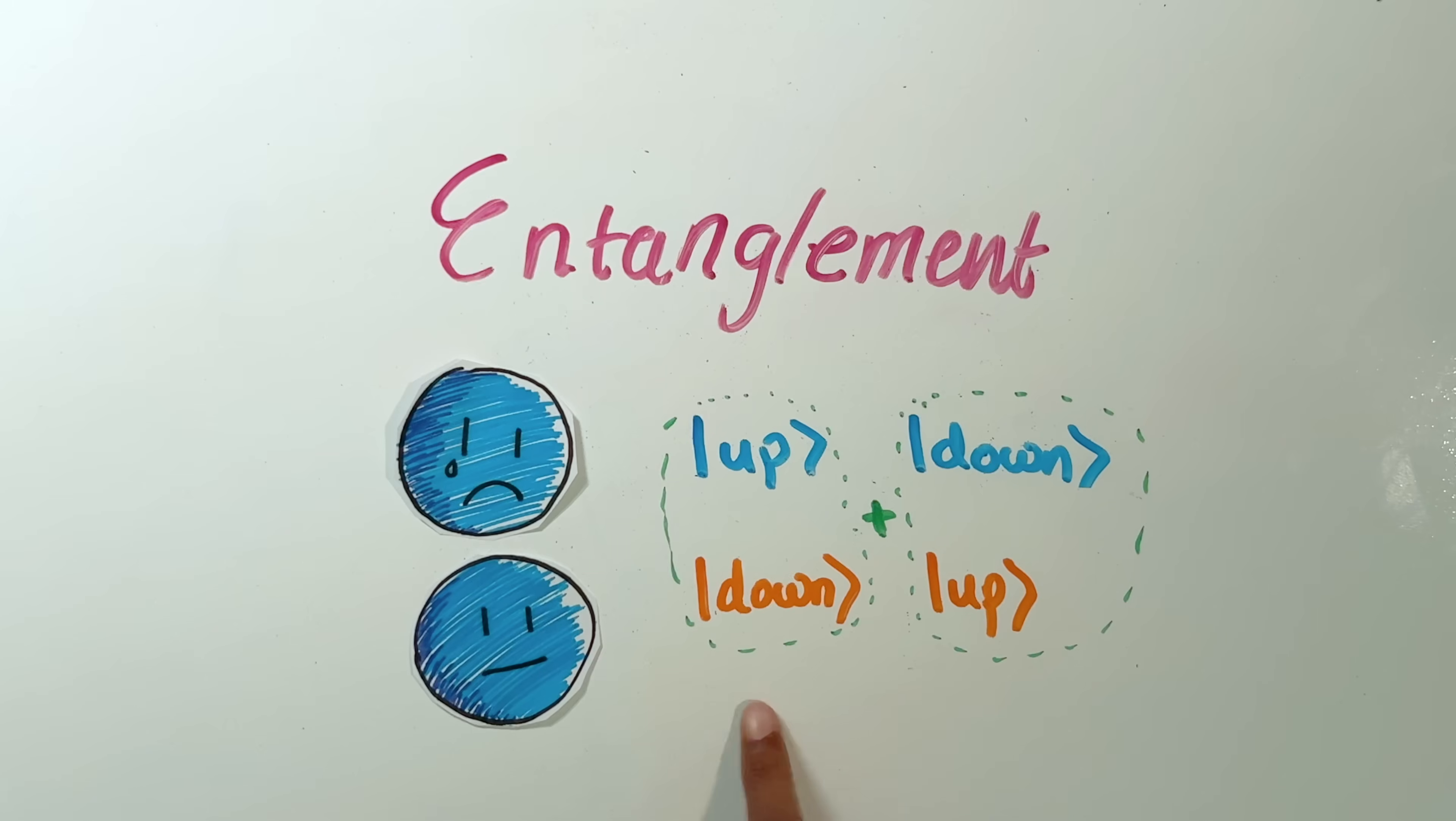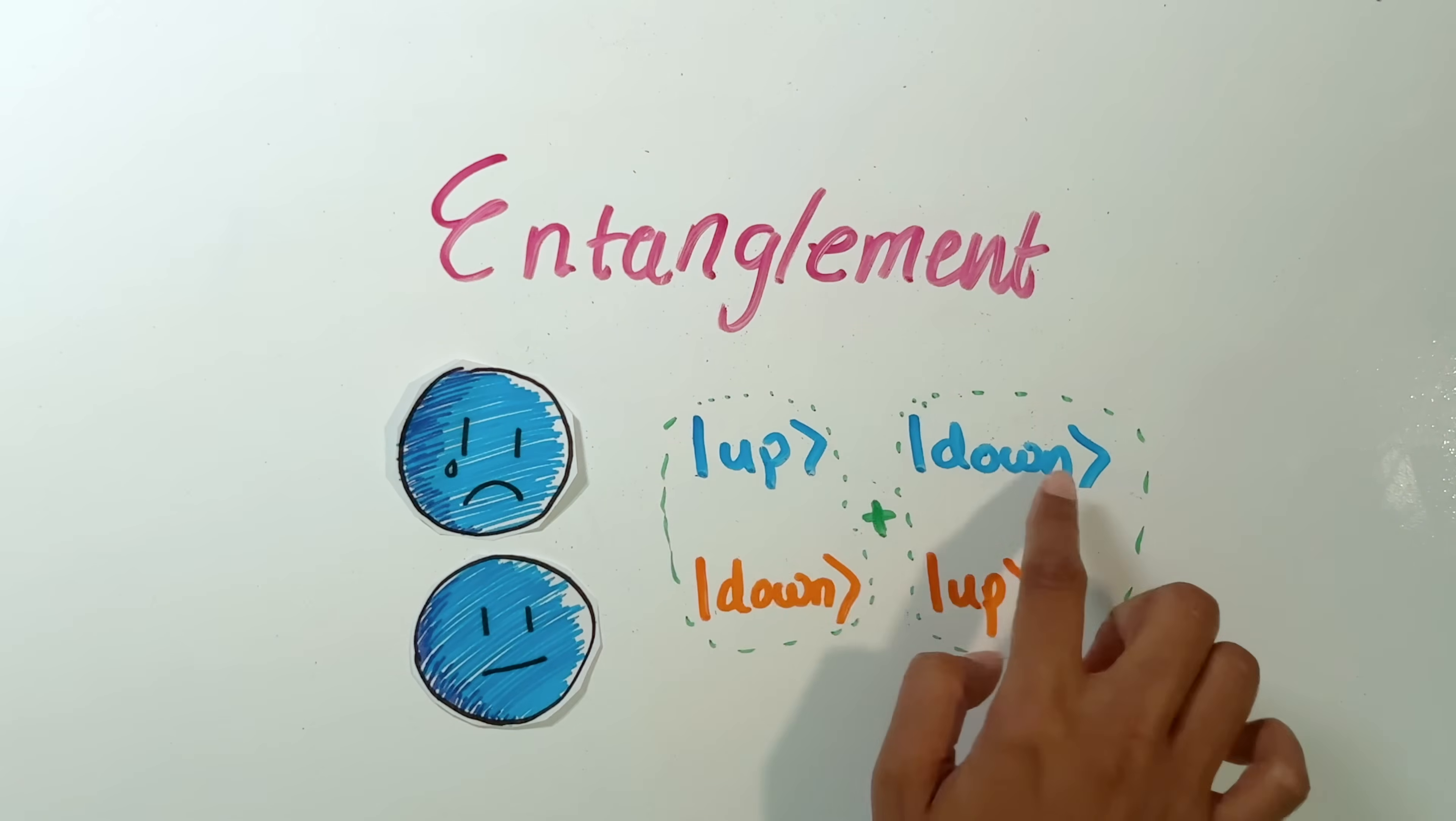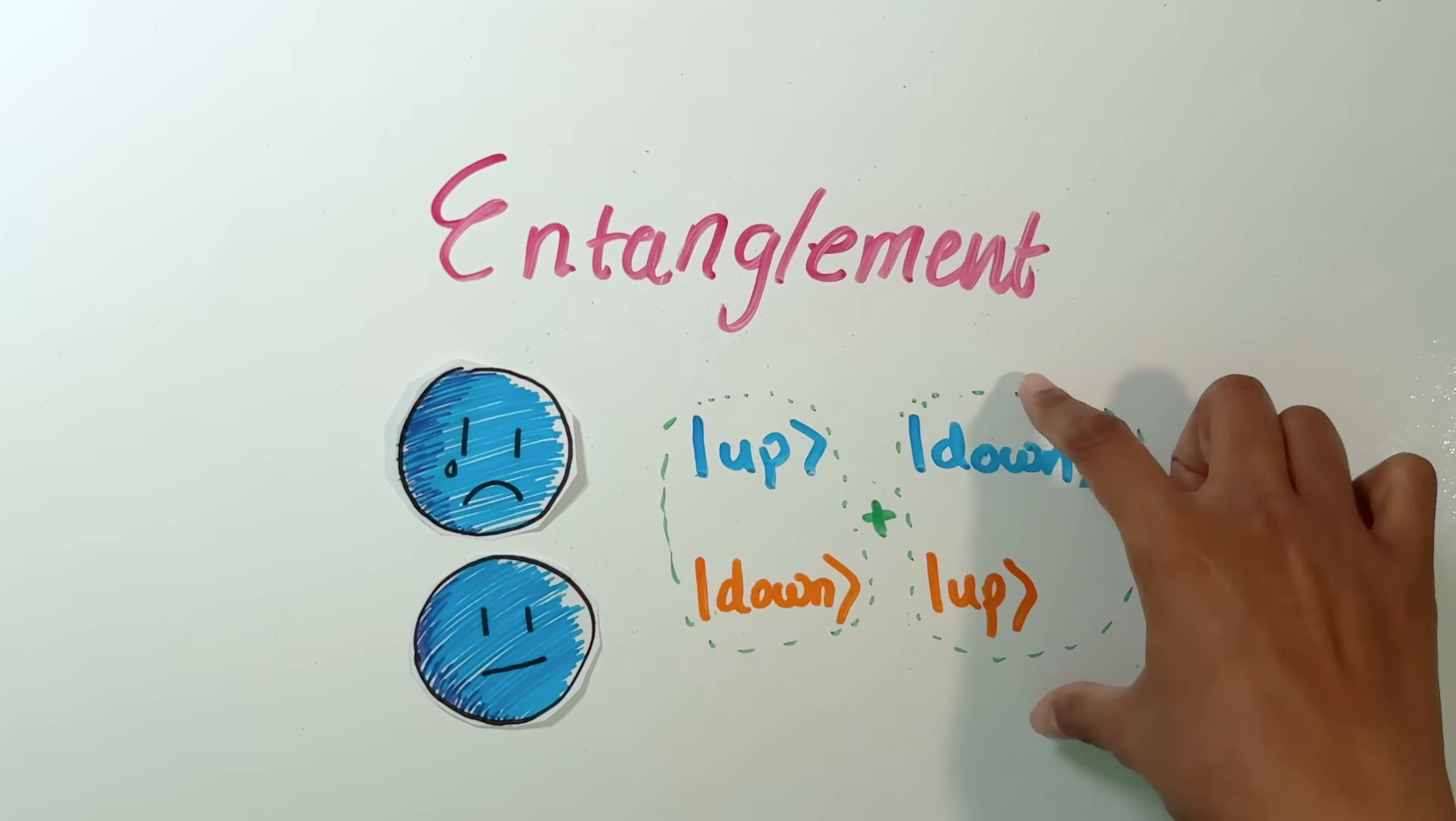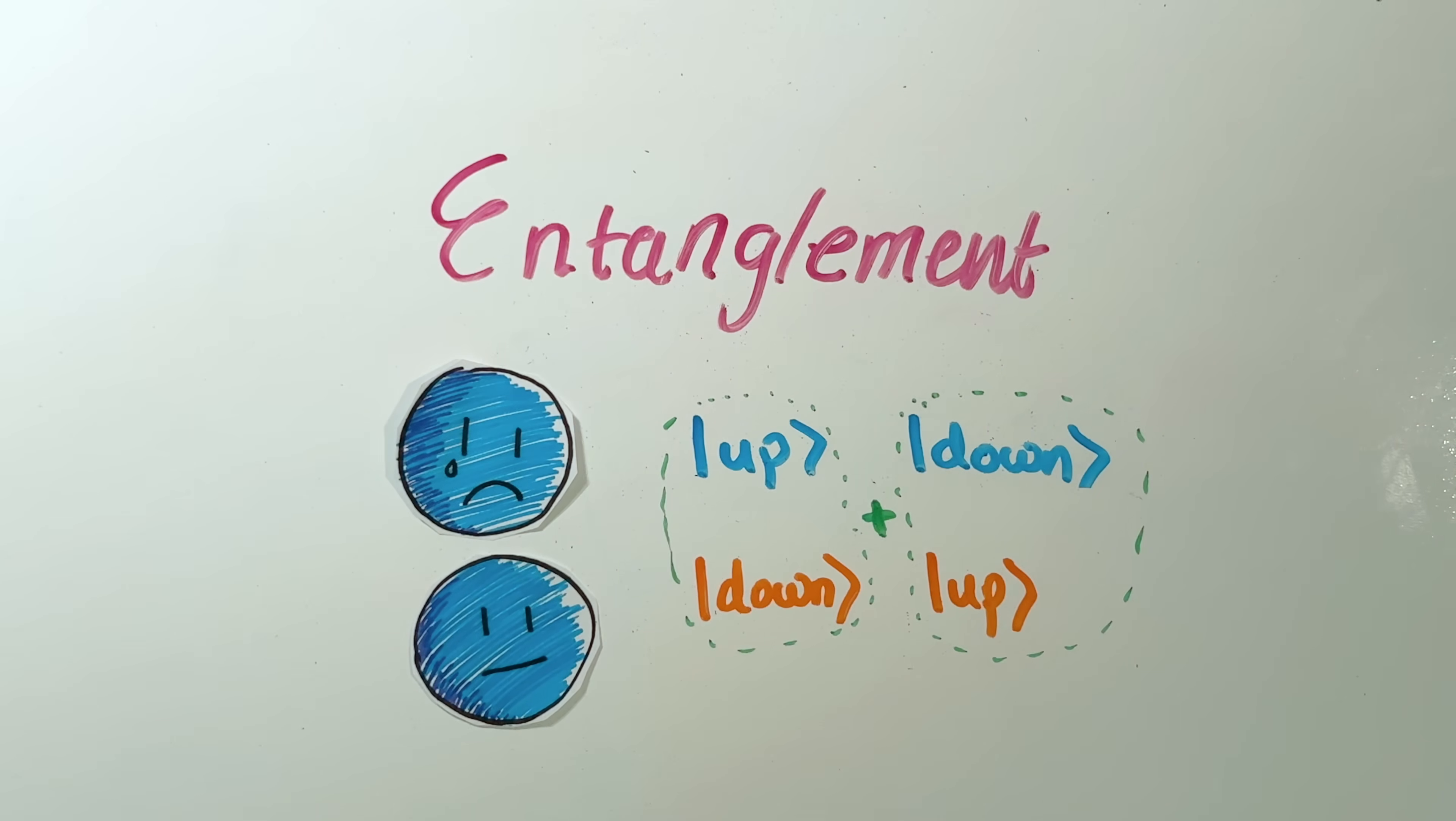Now the state is entangled. I'm going to rewrite it like this because there's two options. Either this one is up and this one is down, or this one is down and this one is up. But actually, because the original electron was doing both of these things at the same time, it must be the case that now both of these options are happening at the same time.